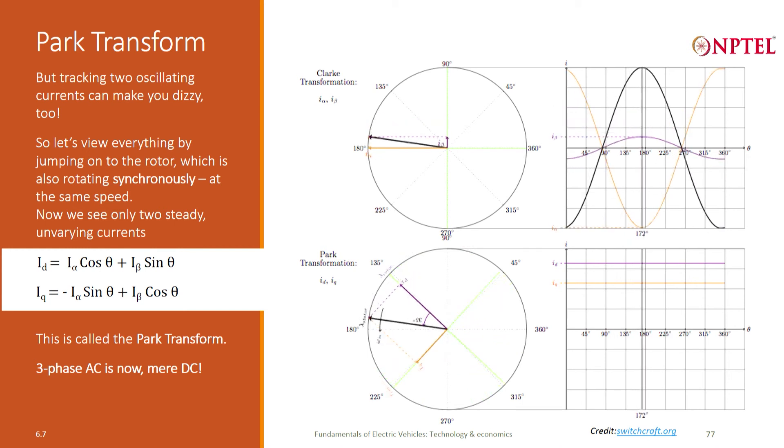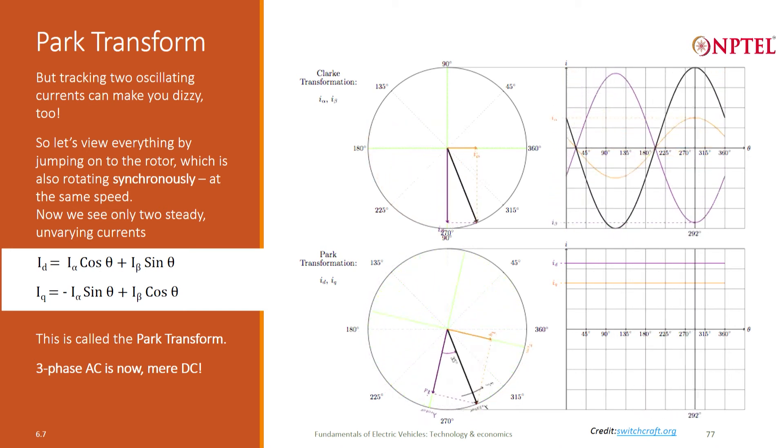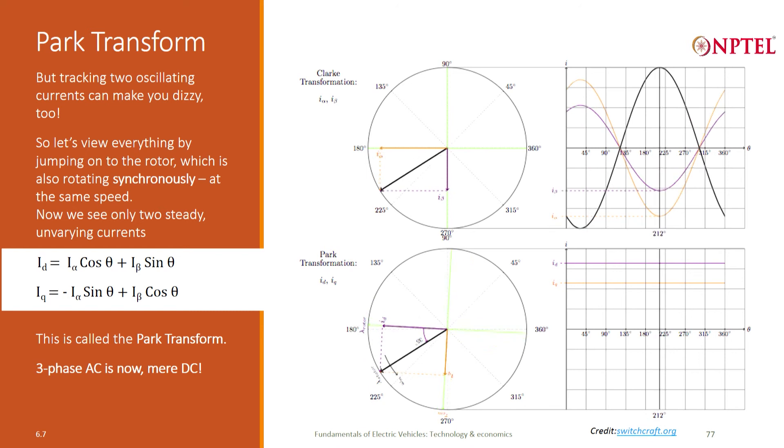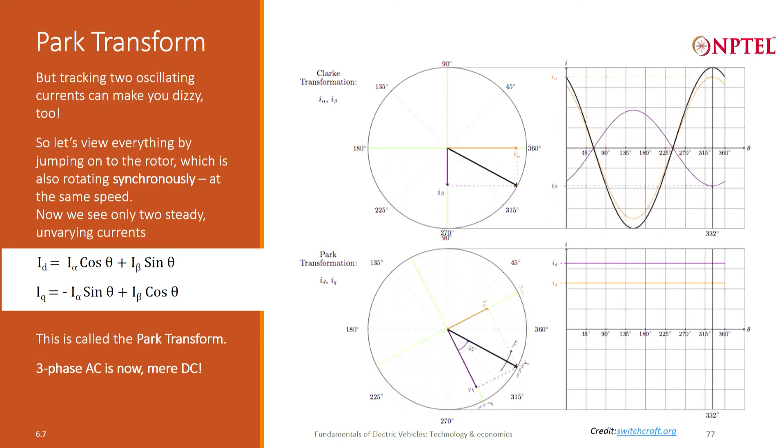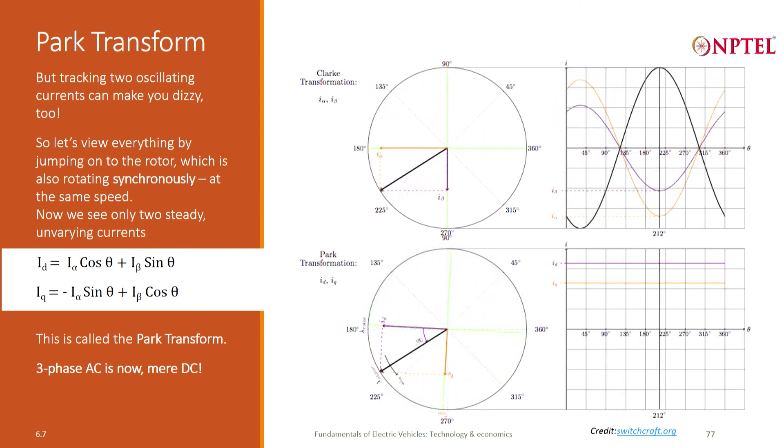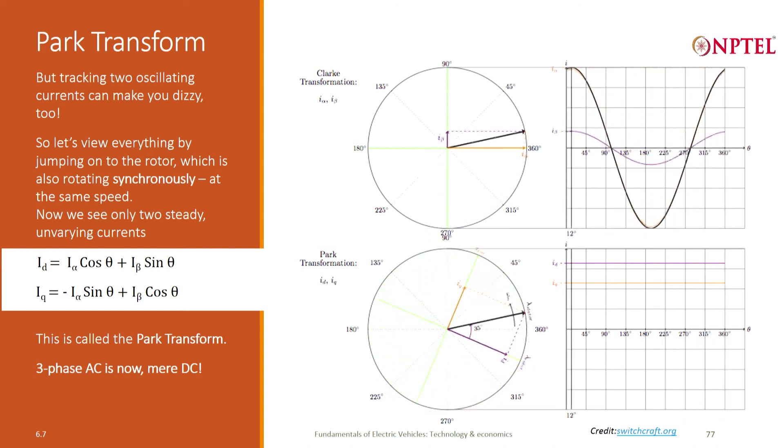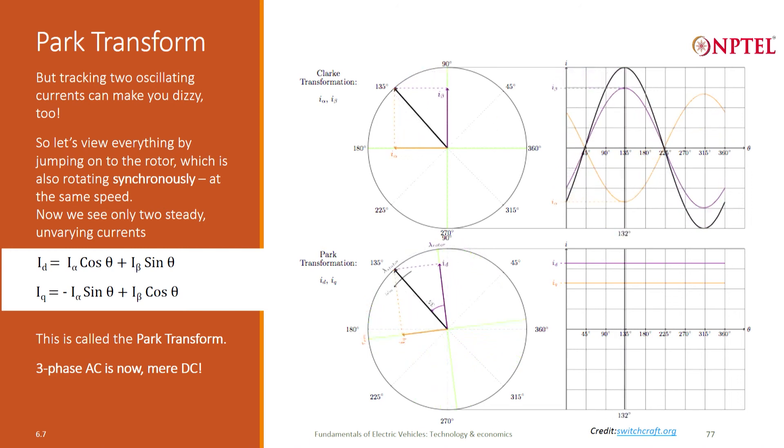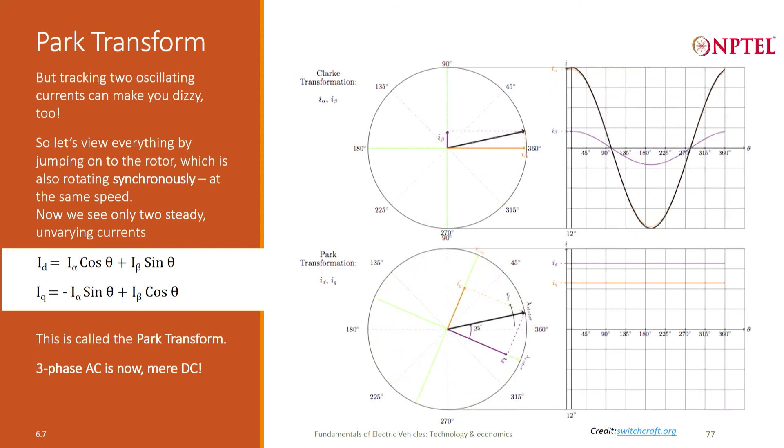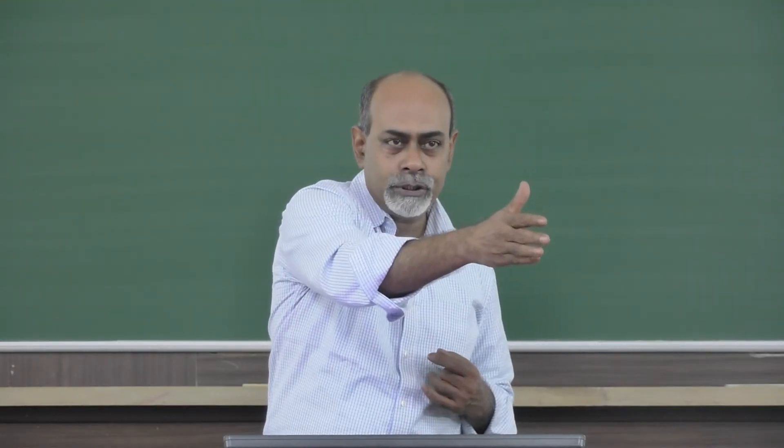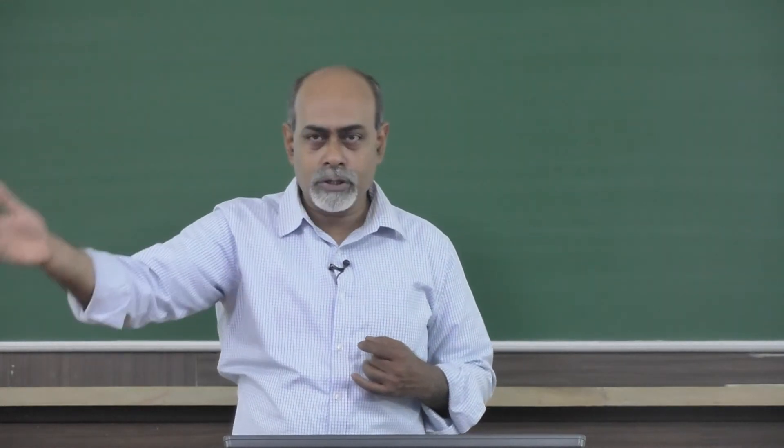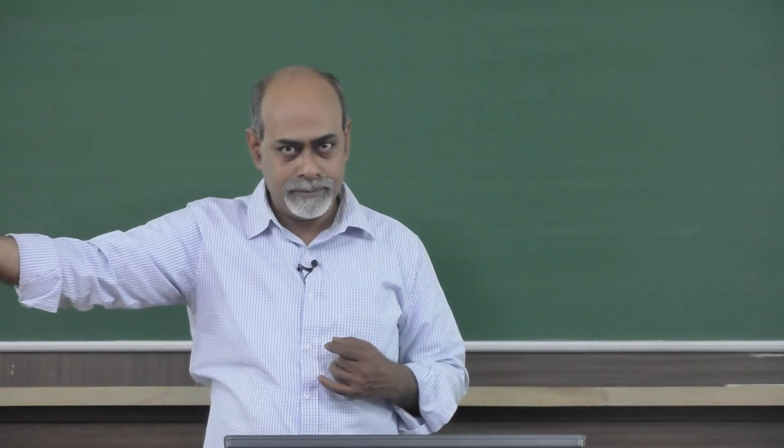So these two transforms - Clark transform and Park transform - allow us to go from the motor to the controller. The motor works in the AC and the controller works in the DQ reference frame which is DC. And then once we figure out what is the control corrective action to be applied, the result is again a pair of DC voltages VD and VQ which have to be applied to the motor in the AC domain. So we have to transition once again back from a pair of DC voltages to three AC voltages, and that journey is called the inverse Park and inverse Clark transform.